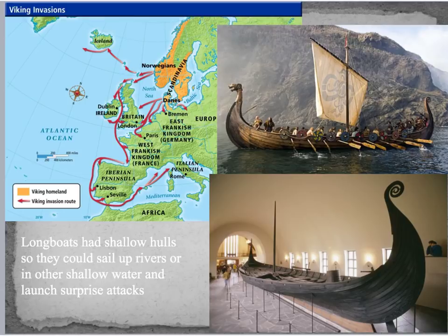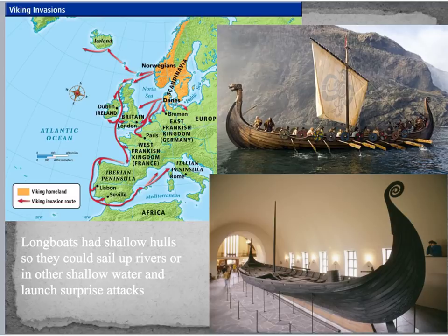The Vikings are known for their ships, called longboats, which have a shallow hull. This is significant because the Vikings could sail even up rivers since they had these shallow-hulled vessels. People didn't expect to be attacked inland, but the Vikings launched surprise attacks not just on the coast but inland as they were doing these raids.